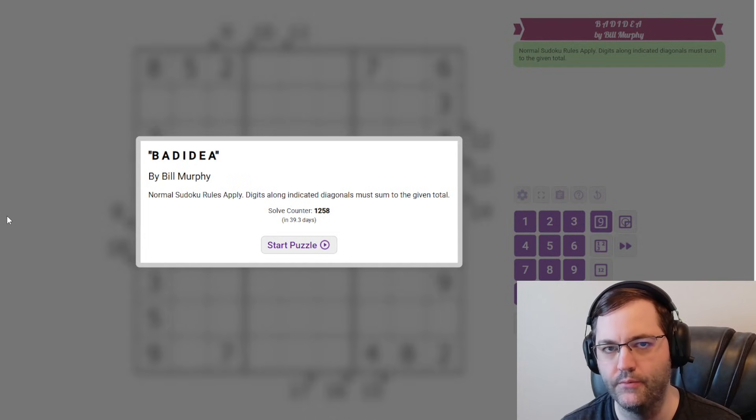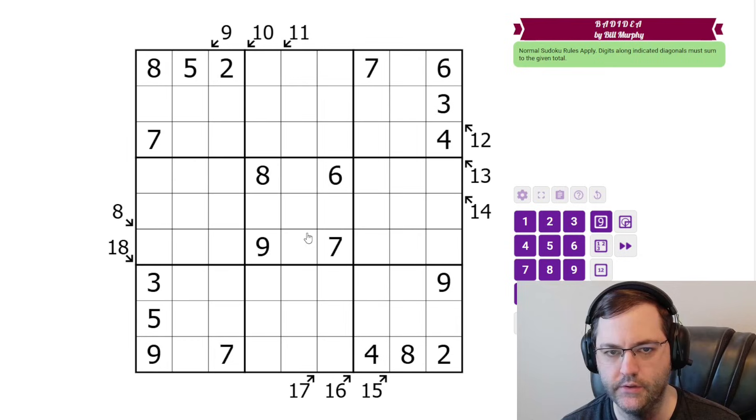Hi everyone, this is the Gas Walkthrough for November 14th. I'm Philip Newman. Today I am solving 'Bad Idea' by Bill Murphy. This is a little killer Sudoku.